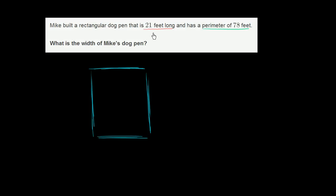So let's say that this is the dog pen right over here. They give us its length. Its length is 21 feet. So this distance right over here is 21 feet. And of course, if that distance is 21 feet, this distance is also going to be 21 feet.